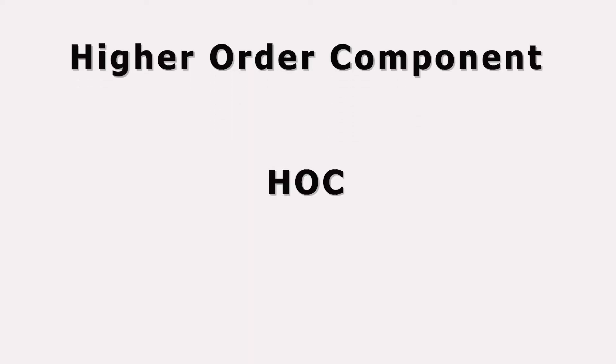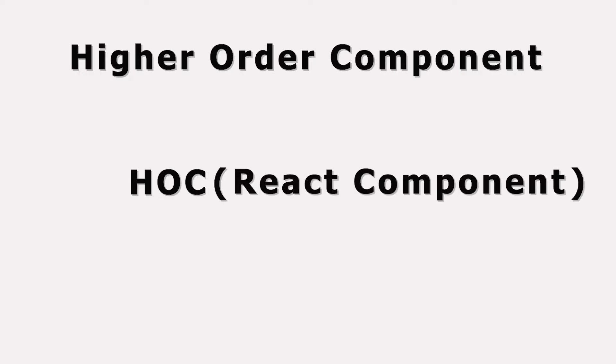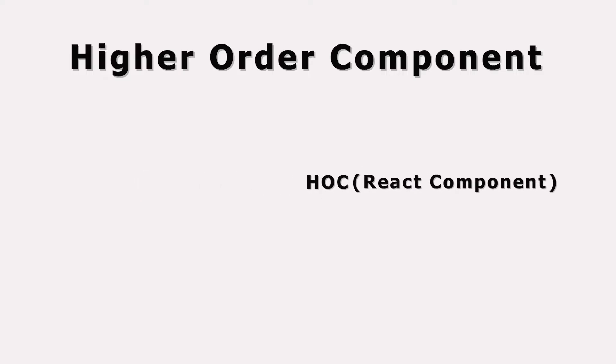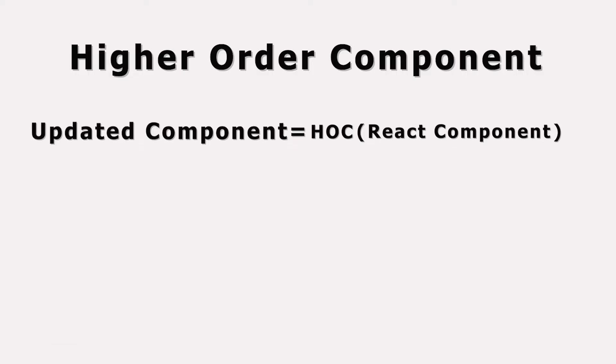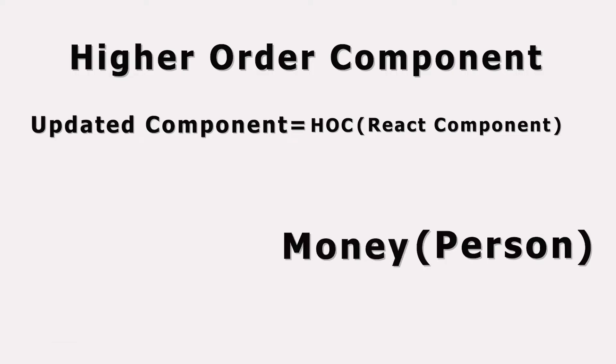Higher order components in React, or HOC, are basically a JavaScript function that takes a React component as input and produces a new updated JavaScript component. From a non-technical point of view, you can say a person with money is a rich person. Here, the person is the parameter or input, the money is the higher order component, and the rich person is our updated component.